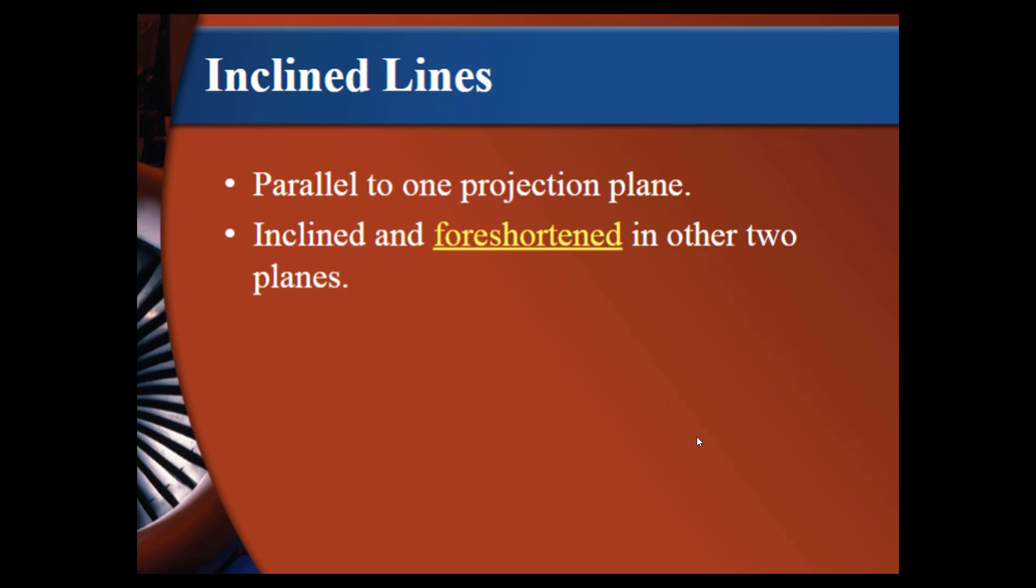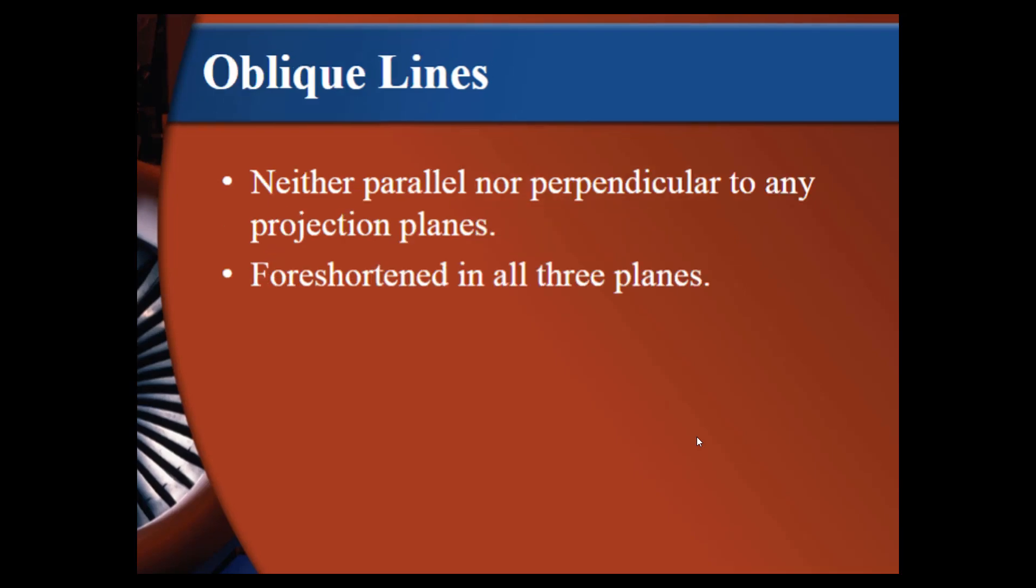Incline lines. These are parallel to one projection plane. Inclined and foreshortened in other two planes. If I'm looking at a sloped surface from the front, it is not going to be the true length of that sloped surface. It's just going to give me the top and the bottom of that surface and it's probably going to be foreshortened. Oblique lines. These are neither parallel nor perpendicular to any projection planes and they are foreshortened in all three planes. So they are not going to represent their true length in any of the three planes. That is why we do auxiliary drawings where we can show those in their true length.